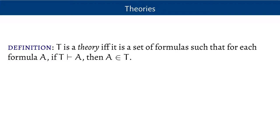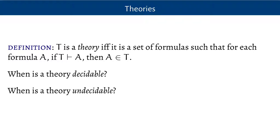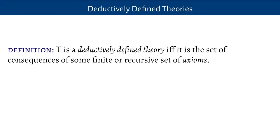A theory is a set of formulas where any consequence of that set of formulas was already in the set — it's closed under its own consequences. Given that this is a set, we can think about when a theory might be decidable, when that question can be answered in a recursive manner. The flip side is that there might be some theories where the answer is undecidable — where there is no algorithm, no process for determining whether a formula is in the theory. We'll look at some ways to show that a theory is decidable, so we can get a sense of where those things might not apply and where we can look for undecidable theories.